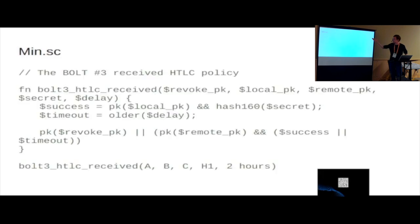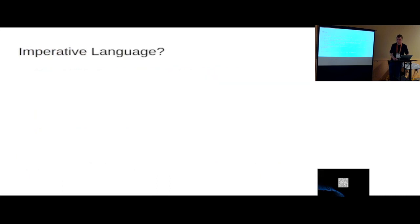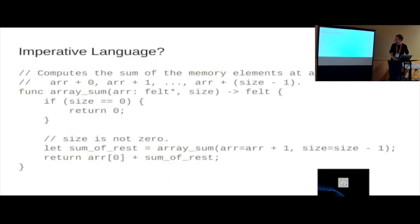There's min.sc, which is a cool website. It's literally the website's name. And you can write functions. You can add variables. You can instantiate those functions and get your spending condition or your Bitcoin script, eventually. Which is really cool. And people should use it more.